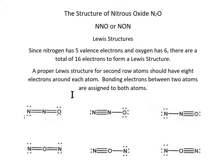Nitrogen has five valence electrons and oxygen has six, so there are a total of 16 electrons in the molecule N2O. A proper Lewis structure for second-row atoms should have eight electrons around each atom. Bonding electrons between two atoms are assigned to both atoms.